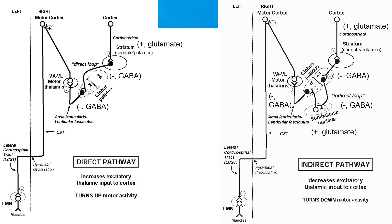The decrease in activity in the globus pallidus externus results in less inhibition of the cells in the subthalamic nucleus — that is, the subthalamic neurons are disinhibited. So the subthalamic nucleus will increase its activity to the globus pallidus internus. The projection from the subthalamic nucleus to the globus pallidus internus is excitatory, so the end result of this indirect loop is an increase in the activity of the GABAergic cells in the globus pallidus internus, which increases inhibition of the thalamic neurons. The indirect pathway therefore turns down motor activity.